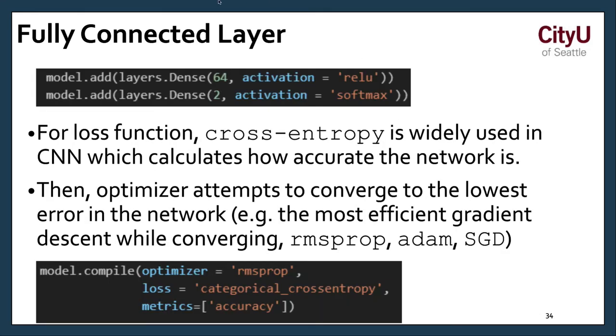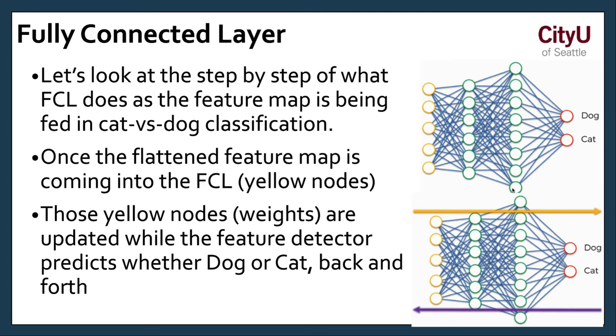To basically add that fully connected, you would put the dot dense and you want to include the activation as well. Cross entropy is widely used in CNN to calculate the network. Then again, after you're done, you have to do compilation. Use an optimizer. There are several, but RMS prop should be fine. And define the parameters. As we have mentioned, the cross entropy and have metrics.